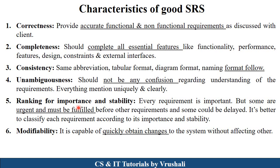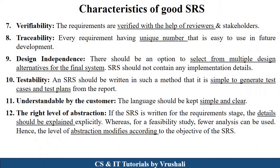Next is ranking for importance and stability — if there are 10 requirements and 5 are needed urgently, the SRS document specifies which requirements are urgent and which are not. Next is modifiability — if the customer wants any changes, they can be quickly made. Then verifiability — all SRS requirements are verified by all stakeholders and the customer. Traceability means every requirement has a unique number, such as Requirement 1, 2, 3, making it easy to use for development. Design independence means multiple designs may be mentioned, but the developer chooses one final design; no coding details are included in the SRS.